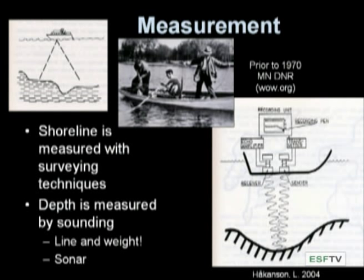People went out in boats with just a line and a weight. They measured the shoreline with surveying techniques, knowing where they were, and estimated the depths of the lake at different points. Today, if you're on a big enough lake, you can have GPS connected to a sonar unit to get a very good indication of where you are spatially and the depth you're at. Sonar sends a sound signal down to the bottom and estimates depth by how rapidly the signal is returned from reflecting off the bottom of the lake.